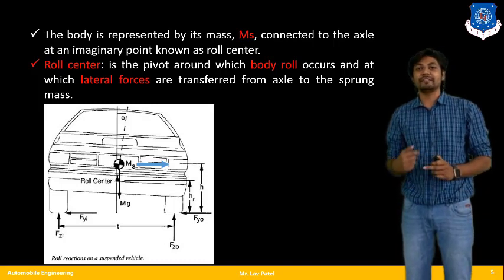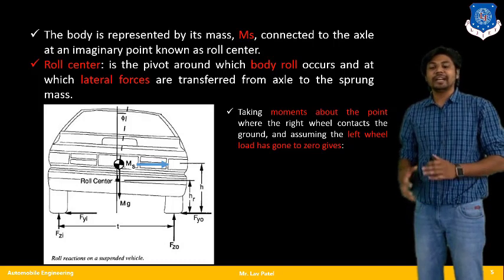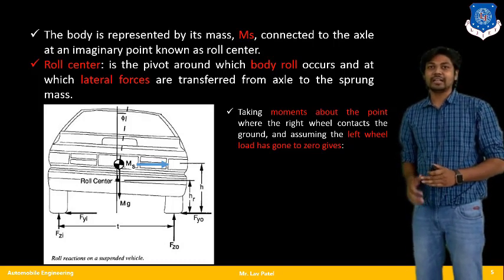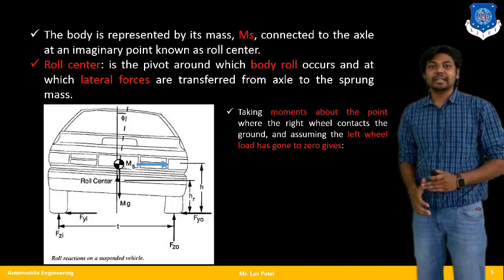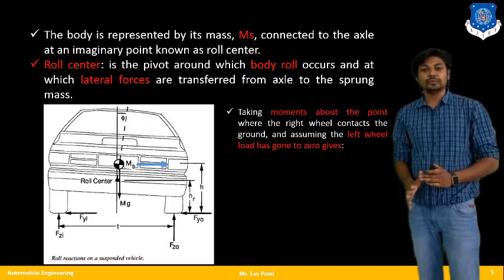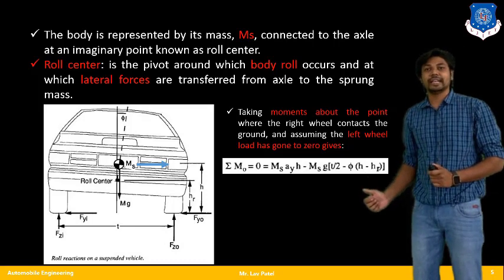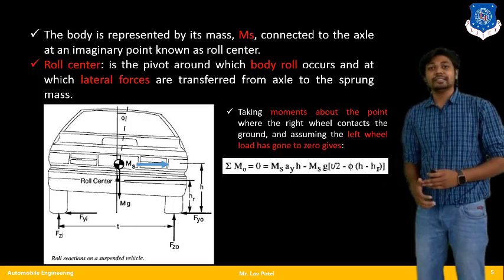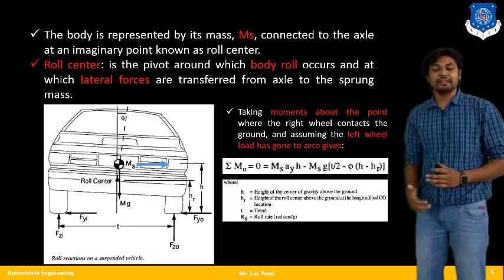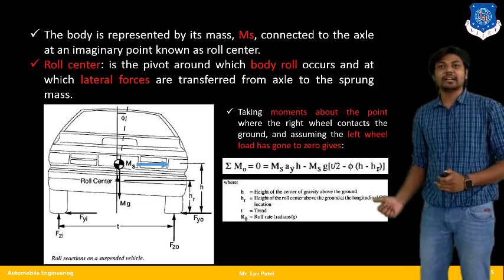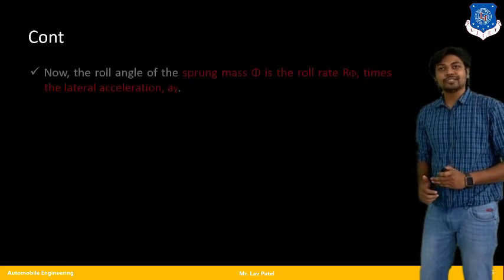Now let us see the calculation part. We are taking moments about the point where the right wheel contacts the ground, assuming that the left wheel has gone to a zero-load condition. From this we find an equation involving nomenclatures like h, h_r, and t, which can also be seen in the figure. From this equation we check our rollover phenomena.